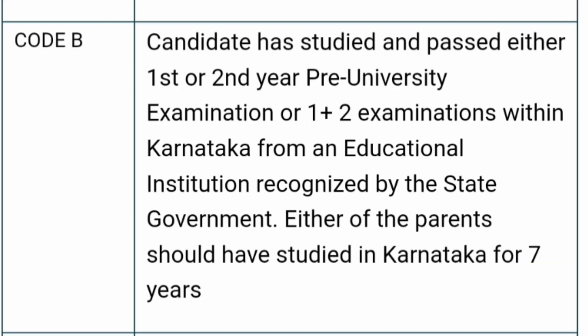If the candidate has passed either PU first year or PU second year in Karnataka from any Karnataka institute, and either of the parents has studied in Karnataka for a minimum period of 7 years, then you are eligibility code B.